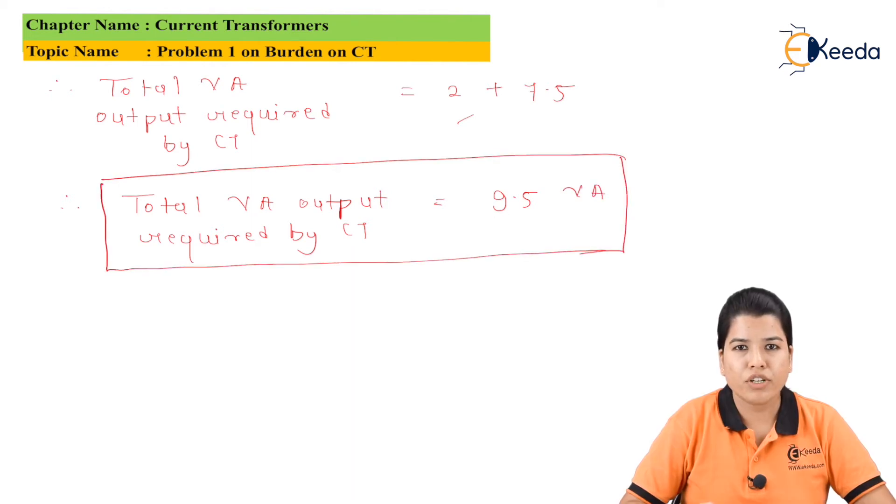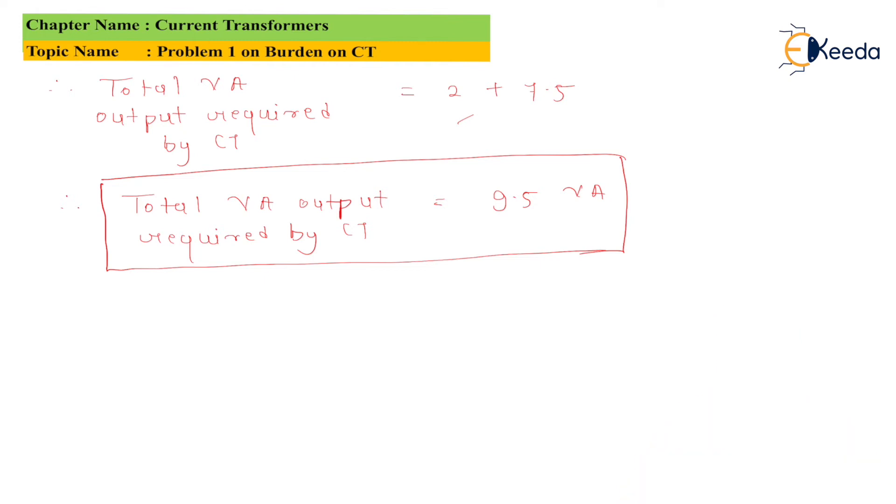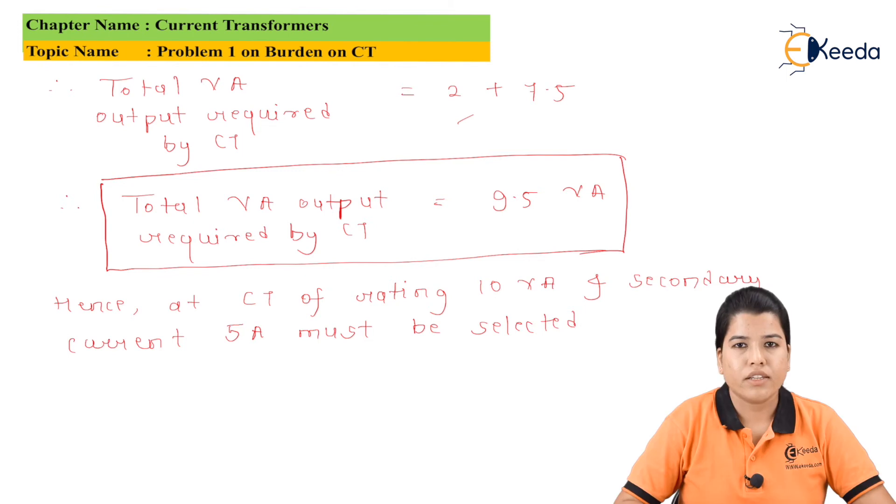Therefore total VA output required by CT is 9.5 VA. For this VA output, the CT of 10VA and the secondary current 5A must be selected.